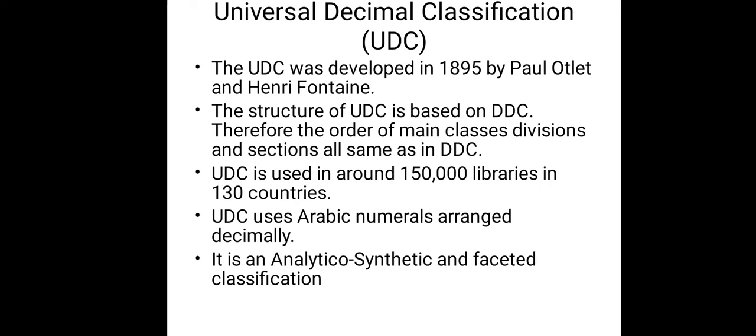The third one is Universal Decimal Classification, UDC. The UDC was developed in 1895 by Paul Otlet and Henry LaFontaine. The structure of UDC is based on DDC; therefore, the order of main classes, divisions, and sections are all the same as in DDC. UDC is used in around 150,000 libraries in 130 countries. UDC uses Arabic numerals arranged decimally. It is an analytical synthetic and faceted classification system.